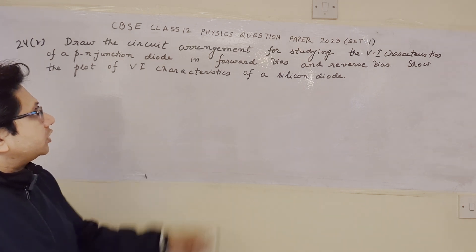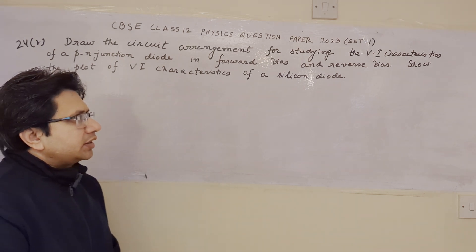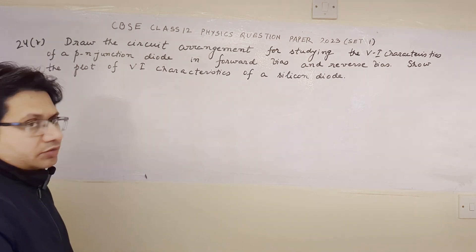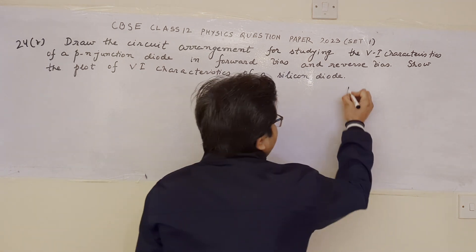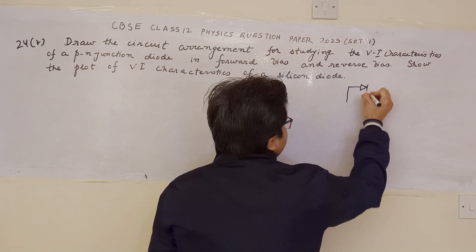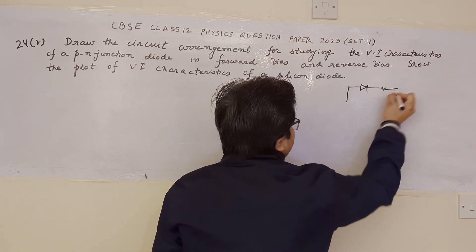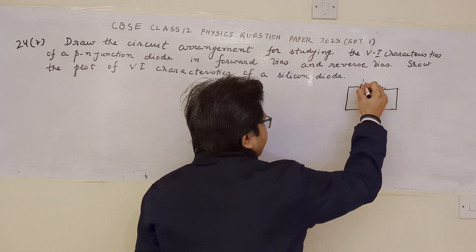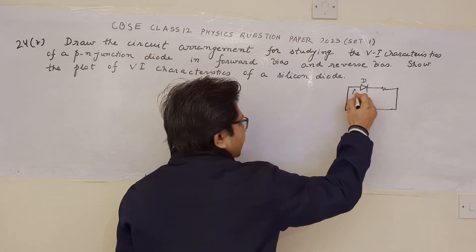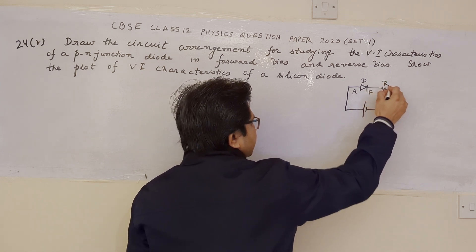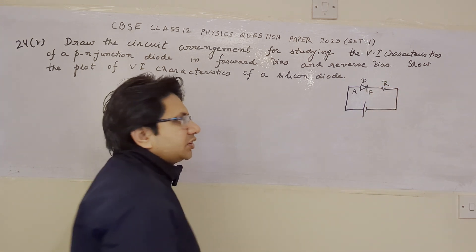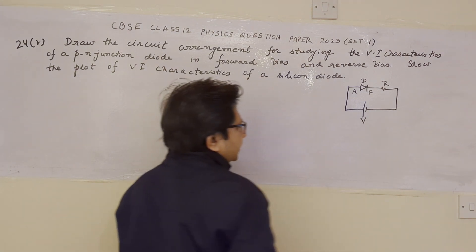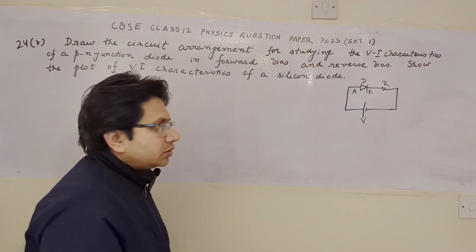In the first part of the problem we have to draw the circuit diagram for the diode in the forward as well as in the reverse bias. The diode in forward bias looks like this. Now here is the diode — this is the anode side of the diode, this is the cathode side of the diode. This is the resistor used to limit the current in the circuit, and this is the battery which is used to supply the energy to the diode.